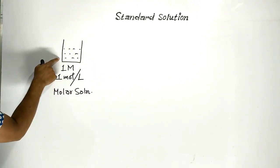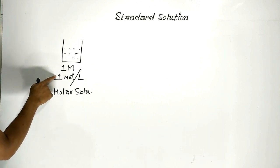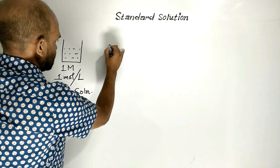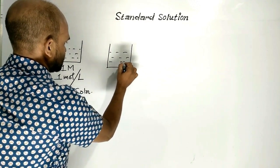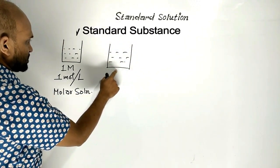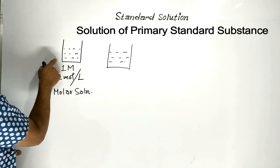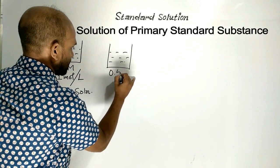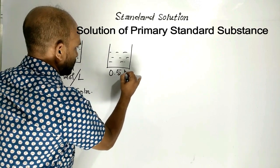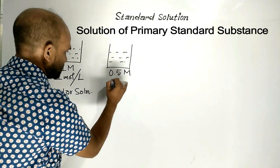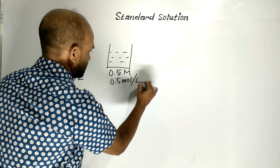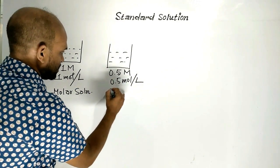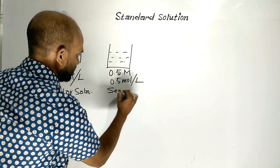So this is the solution. Its concentration is known: one mole per liter. Another solution — a solution of standard substance. Its concentration is suppose 0.5 molar, meaning 0.5 mole per liter. The name of this solution is semi-molar solution.